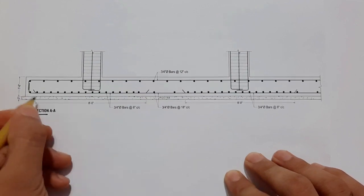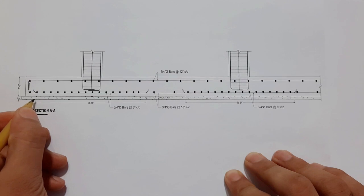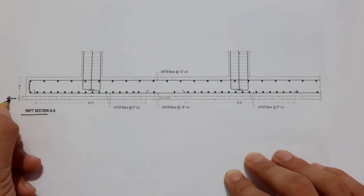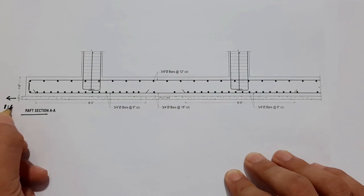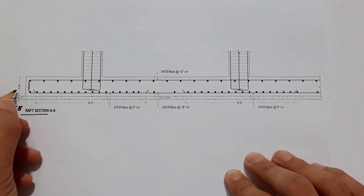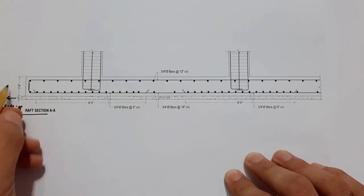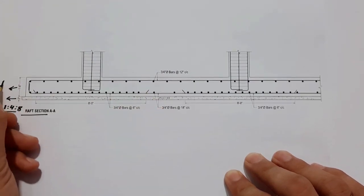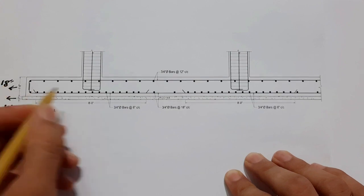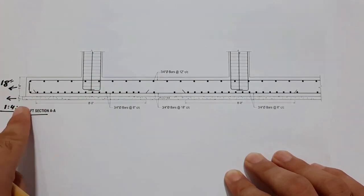We have three inches PCC (plain cement concrete) with ratio 1:4:8. You can do it 1:4:8. Next, you can see with the thickness of three inches, the depth of the raft is one foot and six inches, or 18 inches.